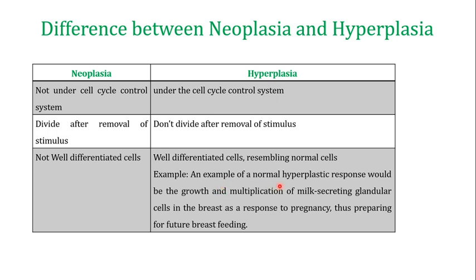An important example of hyperplasia is the normal hyperplastic response: the growth and multiplication of milk-secreting glandular cells in the breast as a response to pregnancy. Pregnancy acts as the stimulus for this hyperplastic response. This excessive growth is required for future breastfeeding and occurs only during pregnancy; in non-pregnant conditions there is no excessive growth of these milk-secreting glandular cells.